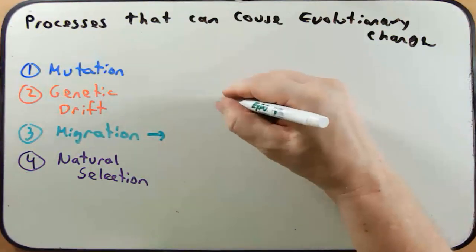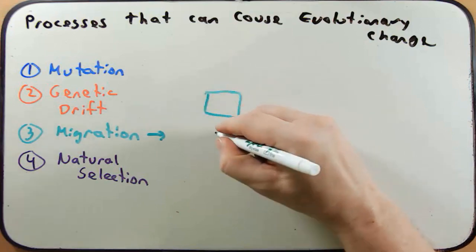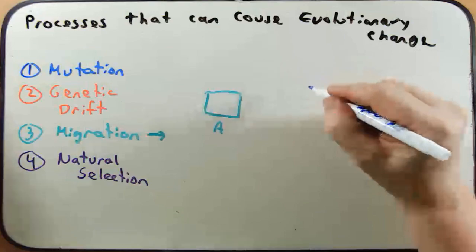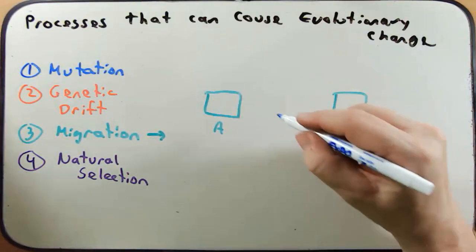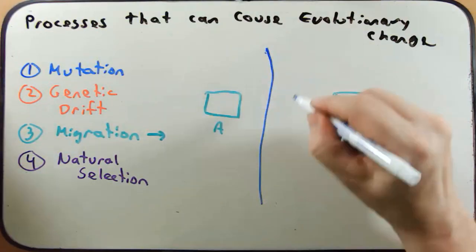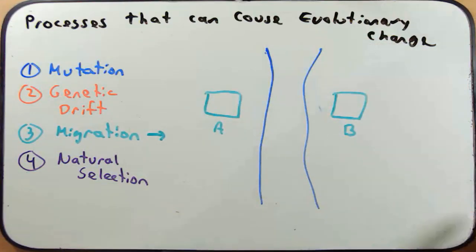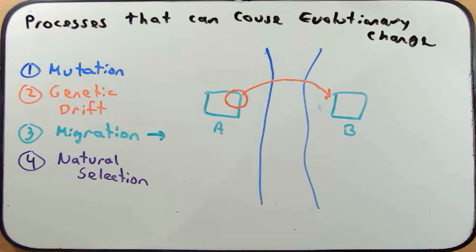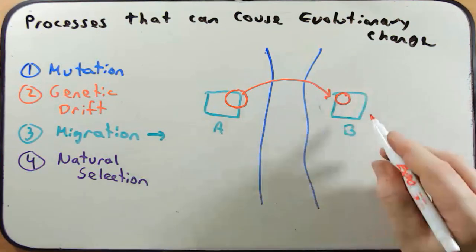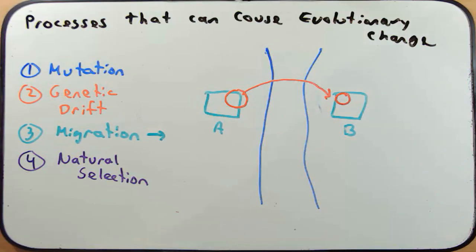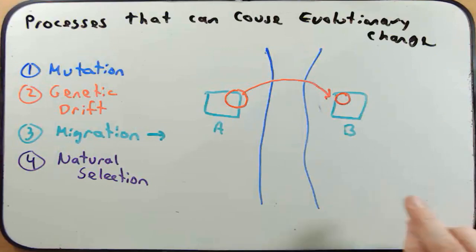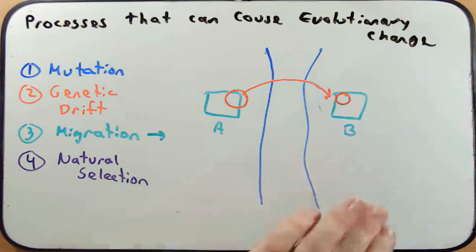Migration occurs when you have a population at point A and a new population at point B, perhaps separated by a mountain or large river. If a portion of population A migrates over and begins to interbreed with members of population B, this leads to a change in allele frequencies in population B because you've just introduced new alleles to it.